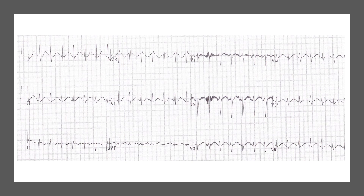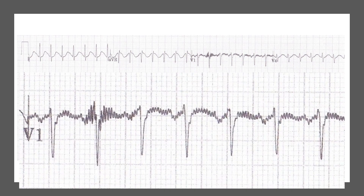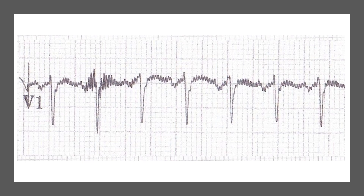Let's go back to our ECG and apply this tip. We're looking at narrow complex regular tachycardia — SVT versus flutter versus sinus tachycardia — and there are no clear P waves anywhere. But if we focus on V1 and make it bigger, we can see that there is a regular deflection happening before each complex. That's the P wave. There is only one P wave before each complex in V1, which means this was a sinus tachycardia case.